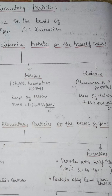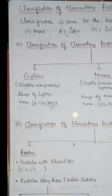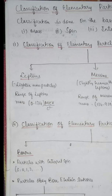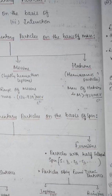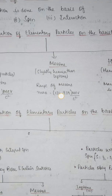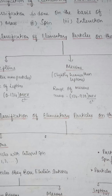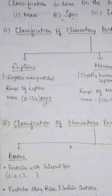On a mass basis, the first group is leptons, the second group is mesons, and the third group is hadrons. Leptons are lighter mass particles.